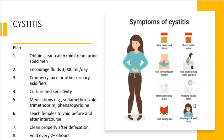Cystitis is inflammation of the bladder. It occurs more commonly in females. Predisposing factors include catheterization and instrumentation. Assessment findings include dark, cloudy urine, hematuria, lower abdominal pain, pain and burning with urination, strong-smelling urine, urinary frequency and urgency, pain during sex, and feelings of malaise and fatigue.